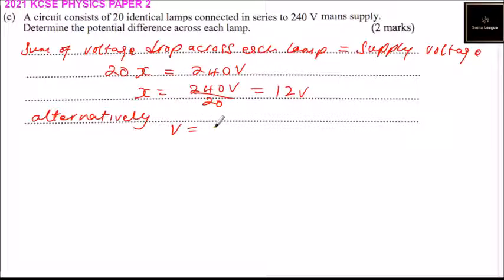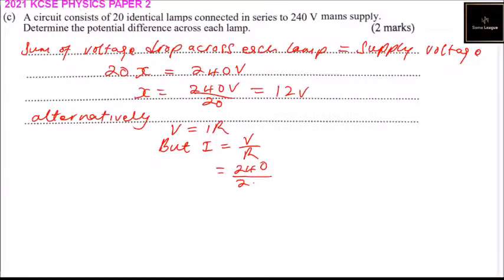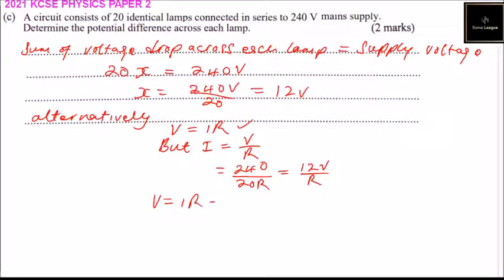Alternatively, you can use V equals IR, or I equals V divided by R. The voltage is 240 divided by 20R — that is 20 lamps multiplied by the resistance — which gives 12 volts divided by R. Since V equals IR, multiply I by R and the R cancels, giving you 12 volts again. By doing that you should get the two marks.